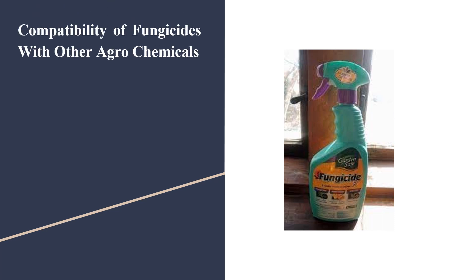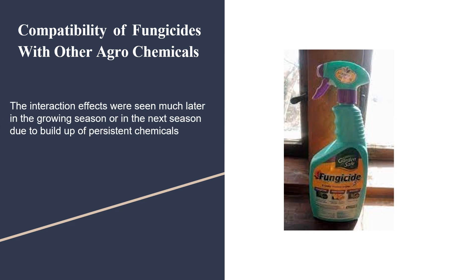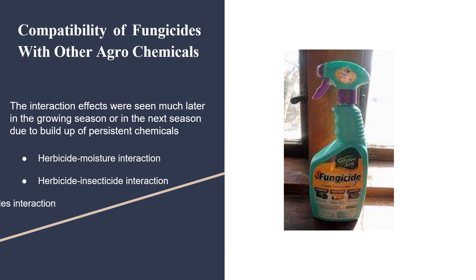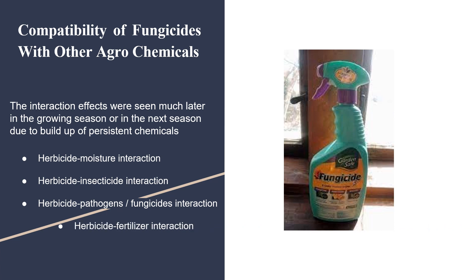Compatibility of fungicides with other agrochemicals: the interaction effects were seen much later in the growing season or in the next season due to built-up or persistent chemicals. The major interaction types include: Herbicide-Moisture Interaction, Herbicide-Insecticide Interaction, Herbicide-Pathogen or Fungicide Interaction, Herbicide-Fertilizer Interaction, and Herbicide-Microbes Interaction.